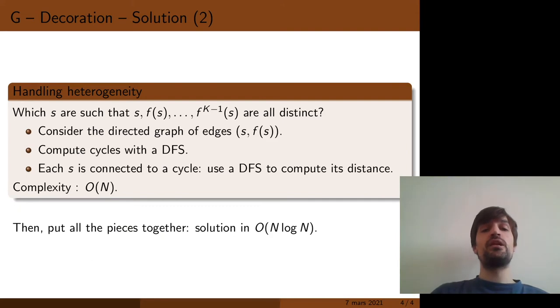The last step of the solution is to handle the distinctness condition of the problem. The question is to determine which integer s are such that f and all the k first iterated images of s are distinct. To do this, we consider the directed graph of edges (s, f(s)). We use a depth-first search algorithm to compute cycles.